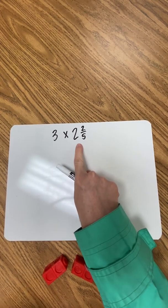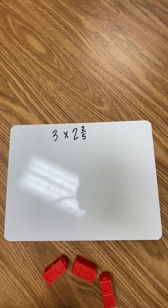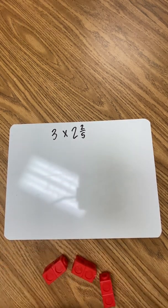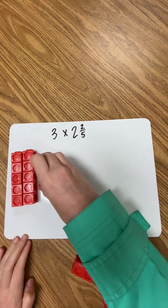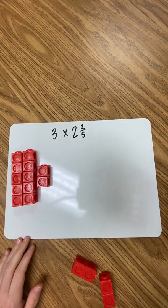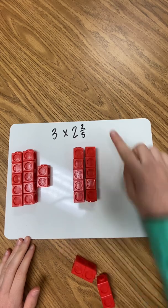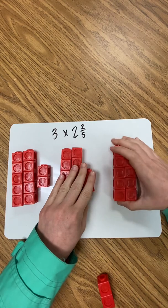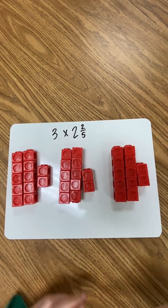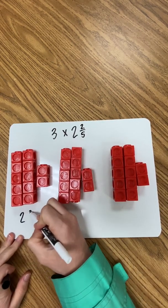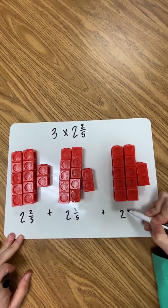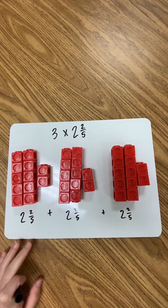But looking at it with visual models, students know this means three groups of two and two-fifths. They can show two and two-fifths visually, remembering that a whole is made up of five-fifths because that's the denominator. So they have two and two-fifths, then two wholes and two-fifths, seeing this as two and two-fifths plus two and two-fifths plus two and two-fifths.